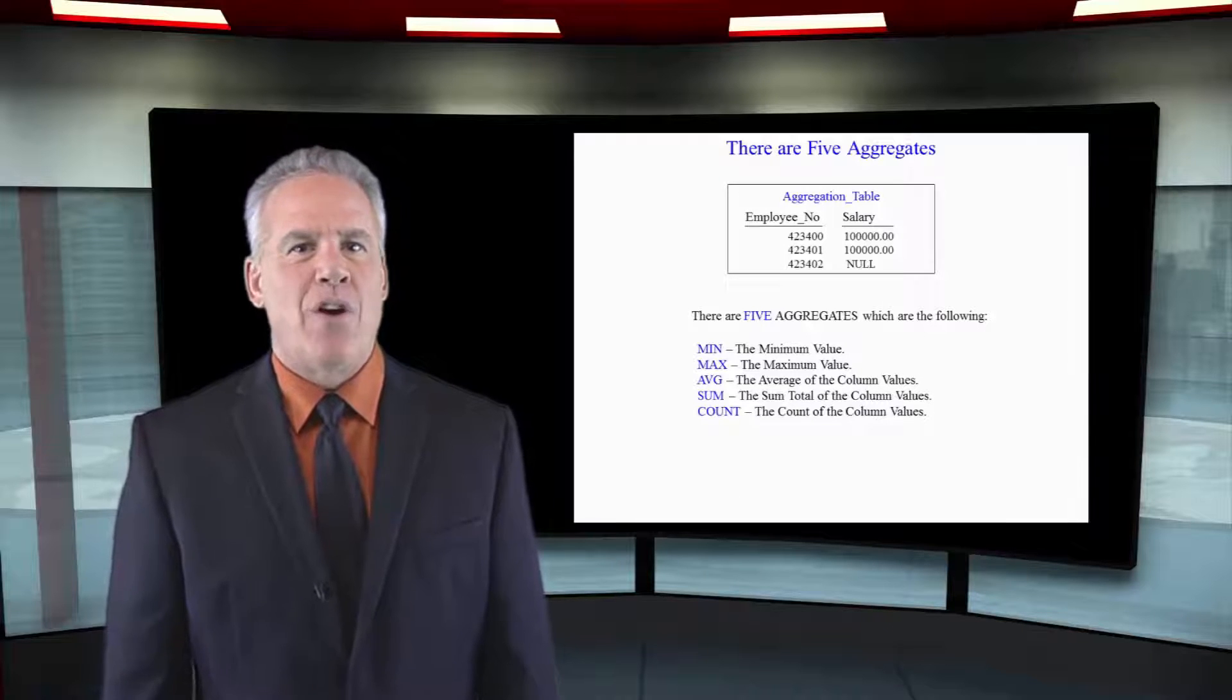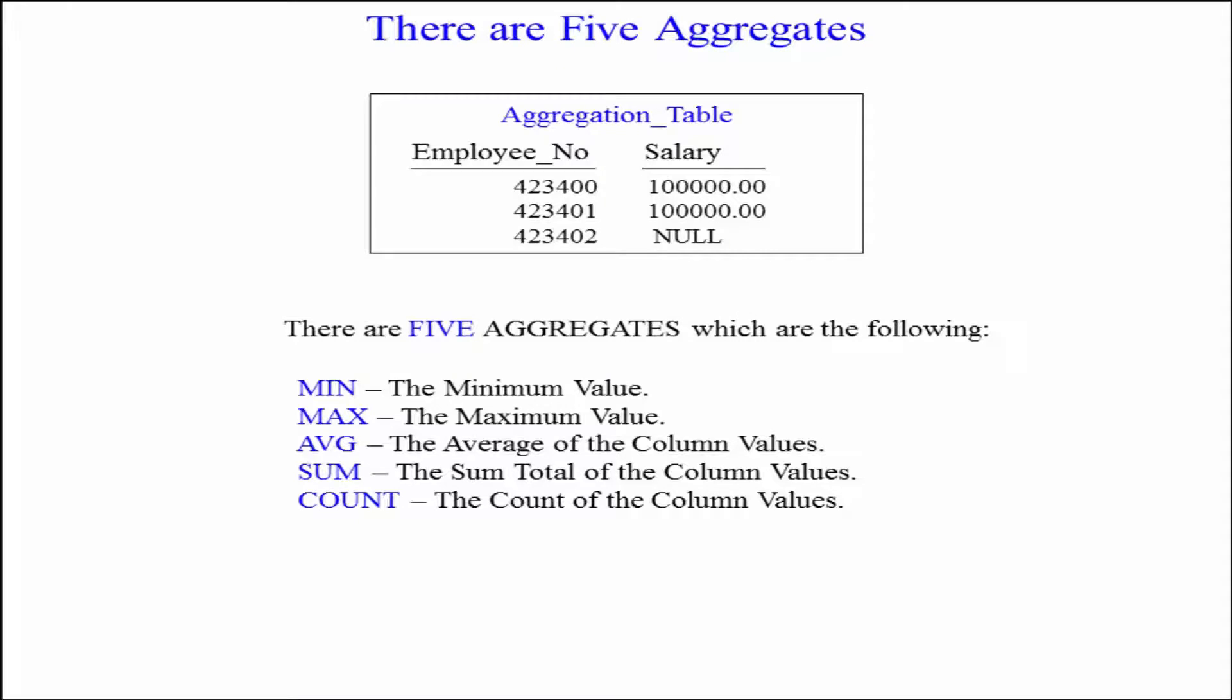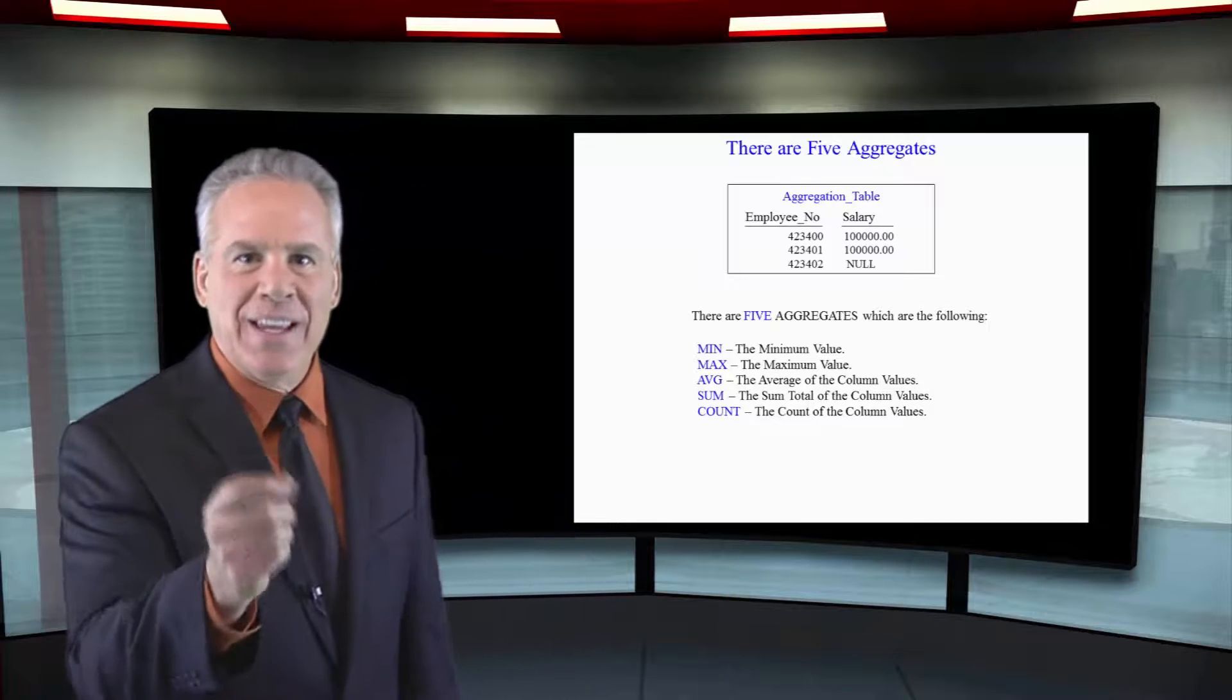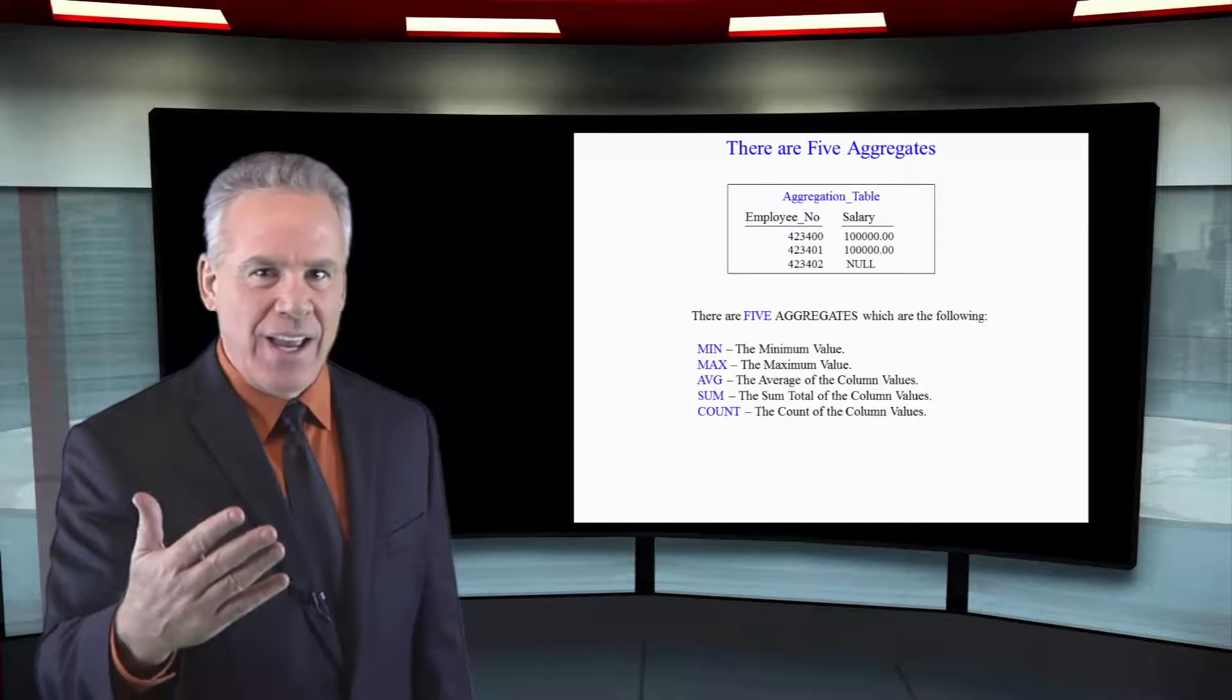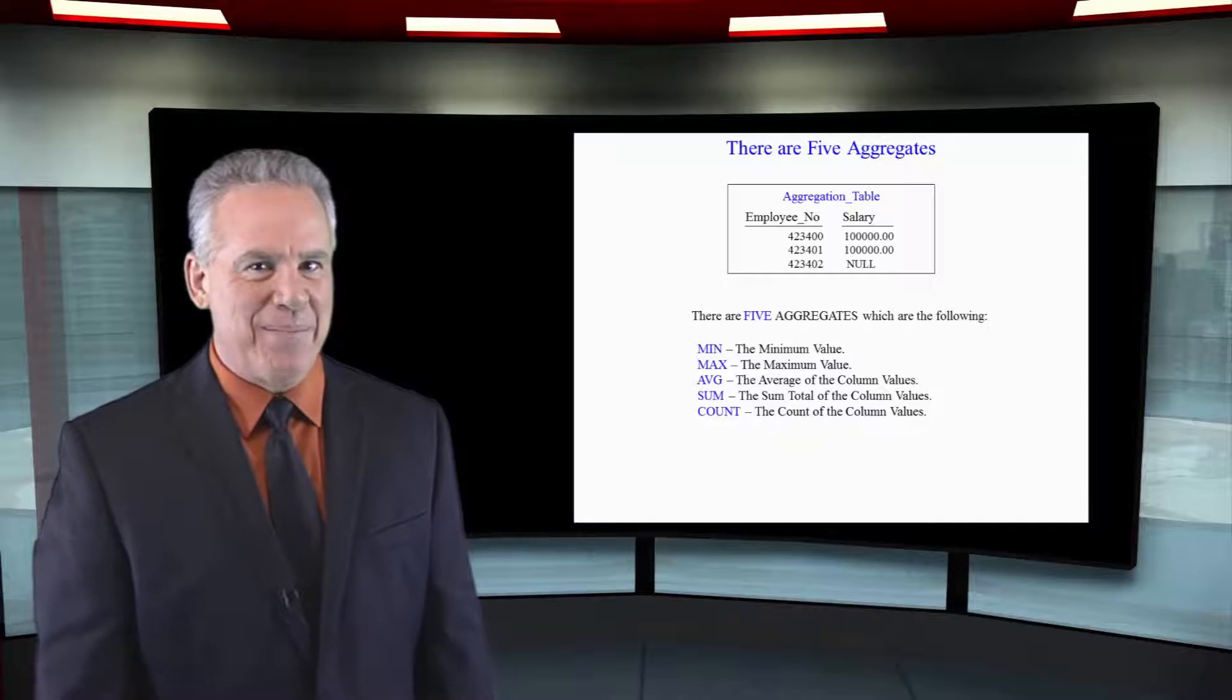Let's just define this right off the bat. There are five aggregates: min, max, average, sum, and count. If you put those in front of another column, it's going to be an aggregation query, and we're going to see that in our next example.